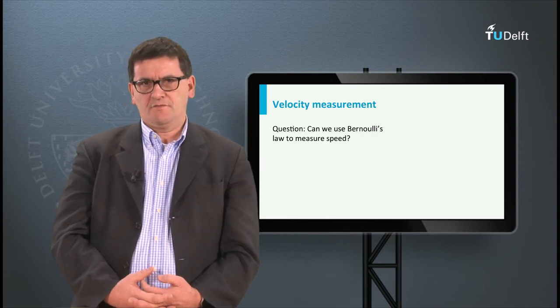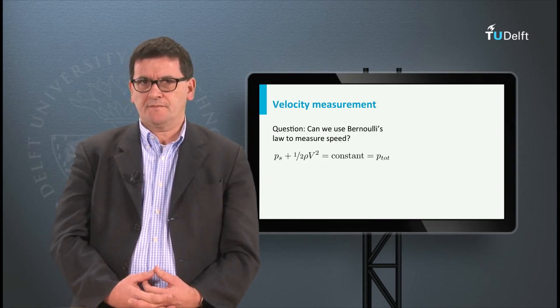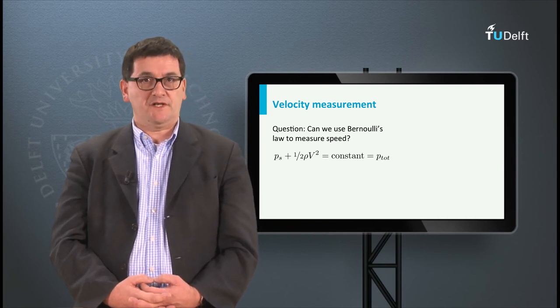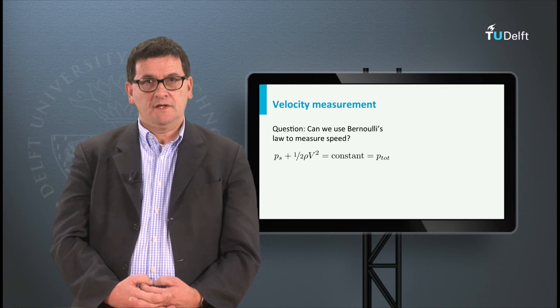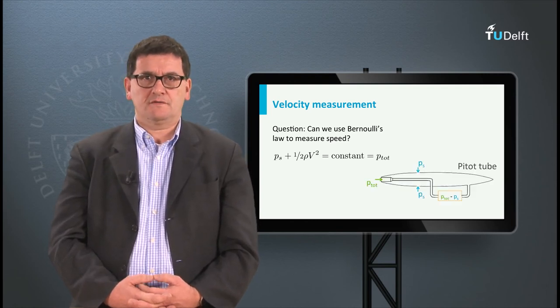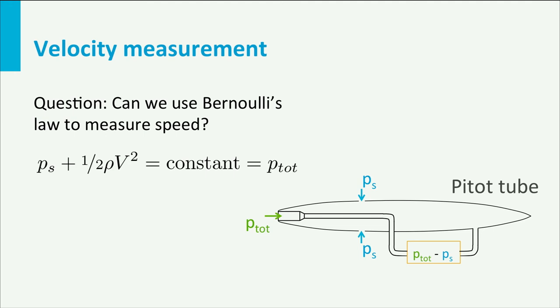Can we use Bernoulli's law to measure the airspeed? If we look at the formula we see that the total pressure is the pressure for zero airspeed. In a pitot tube we can make several small holes. One hole is in front of the tube, head-on in the airflow. The air enters the tube from the left-hand side and comes to a standstill. So here we measure the total pressure.